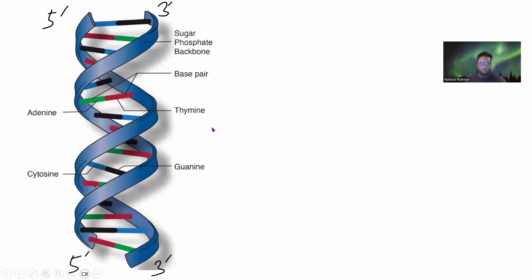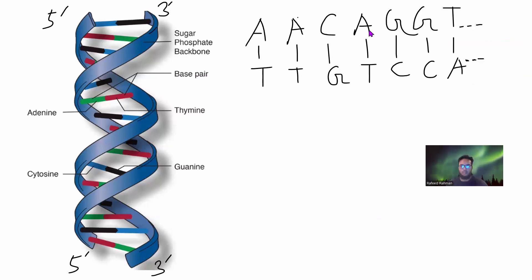First, some basics we need to know. This is a double-stranded DNA - DNA is double-stranded which we all know. You can think of this as the forward strand and this as the reverse strand. In each strand we have actually four kinds of bases: adenine, thymine, cytosine and guanine. A always binds with T and C always binds with G. That's how these two strands remain attached.